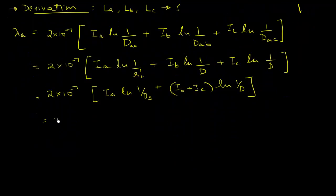I've just taken 1 over d out common. Ib plus Ic can be substituted by negative Ia. So we'll go into 2 into 10 to the power minus 7, Ia ln of 1 over Ds, or not plus, we'd rather do minus - minus Ia because this is nothing but minus Ia ln of 1 over d. Let me write here that Ds is equal to r prime.